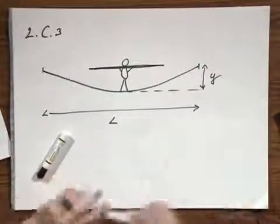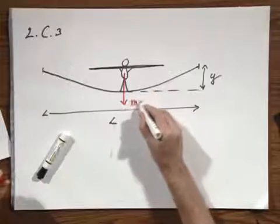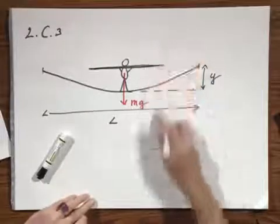Now, the tightrope walker has a mass M. So the gravitational pull down is mg. There is no acceleration in this direction.